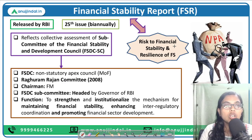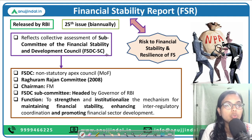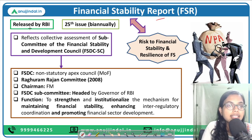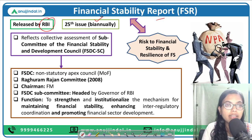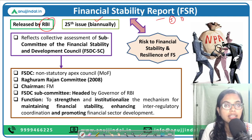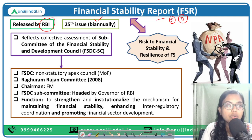So the first question that comes to our mind is who prepares or releases this Financial Stability Report. The answer is RBI. RBI releases the Financial Stability Report twice a year, that is bi-annually — once in the month of July and the other in the month of December. This report is the 25th issue as of now.